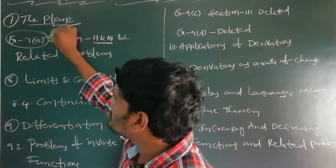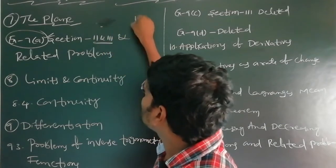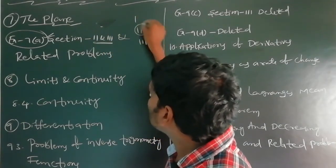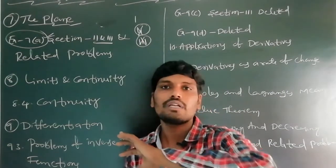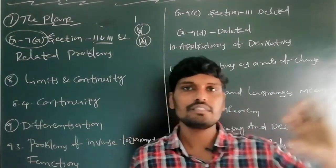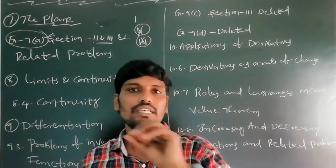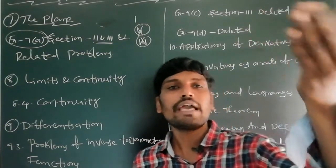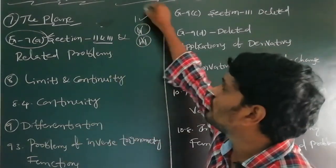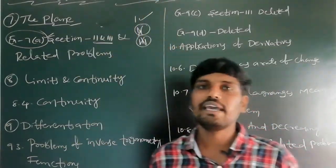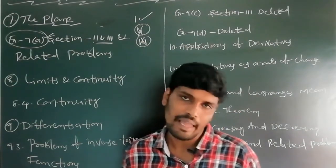Exercise 7a has a total of 3 sections: section 1, section 2, and section 3. In these 3 sections, the second section and third section are totally deleted — second section problems deleted, third section problems deleted, and related examples also deleted. Only section 1 is coming to the IP examination in the Plane chapter.